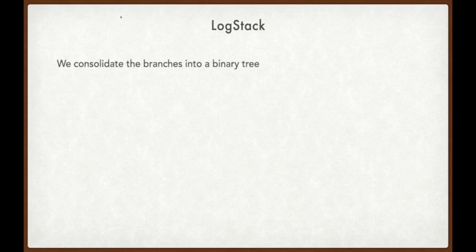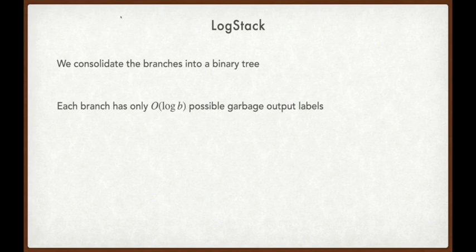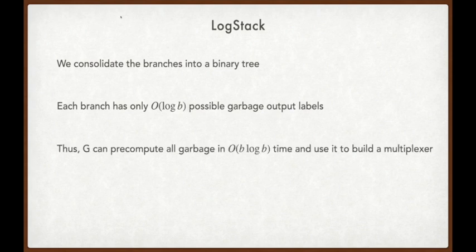We've now seen the key ideas of the Logstack construction. Like stacked garbling, we compress GC material by XORing together the material from each branch, and thus decrease the total communication costs for conditional branching. However, Logstack reduces computation costs by consolidating the branches into a binary tree. This binary tree arrangement reduces the number of possible garbage output labels from each branch from order B to only order log B. The GC generator must still compute all such garbage labels to construct the multiplexer, but G can compute each of these O(B log B) garbage labels in O(B log B) time. Thus, Logstack greatly reduces computation overhead.